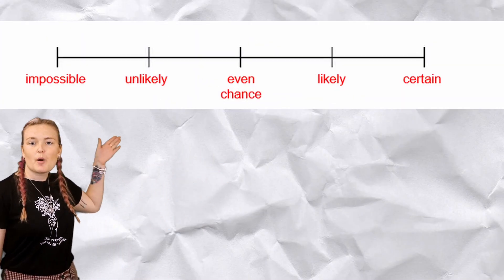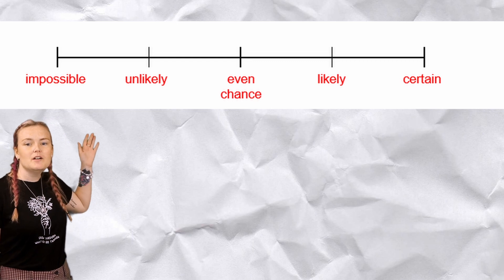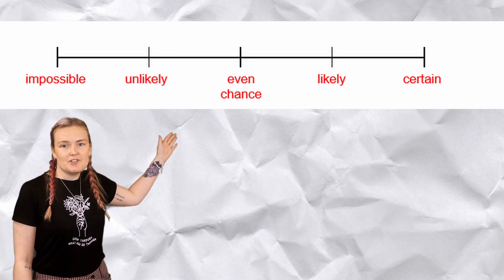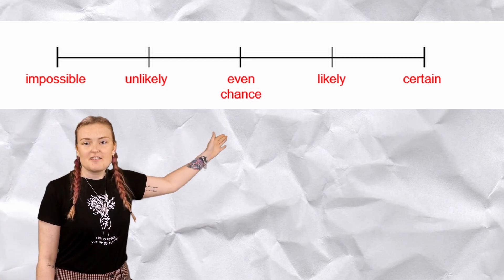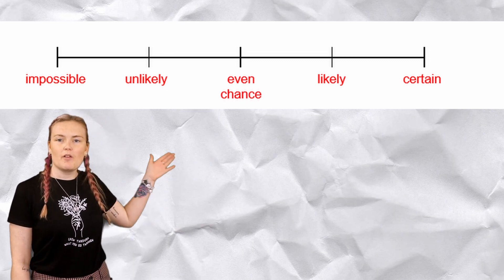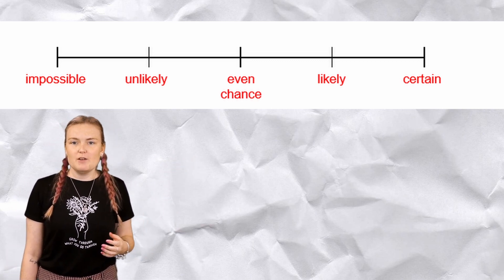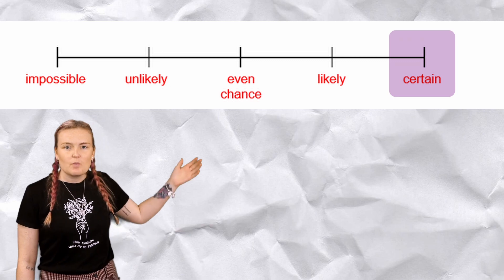In this session we're going to look at an introduction to probability — the likelihood of things happening. Let's look at it in words first. Here I've got a probability scale: it starts with impossible, unlikely, even chance, likely, and certain. We can talk about different events and where we think they would go on the probability scale.